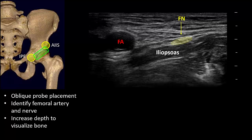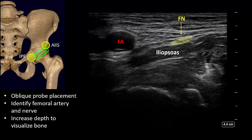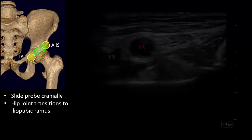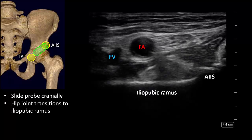Increase the depth as needed to visualize the hyperechoic line of the underlying bone. If this line has a curved appearance, it represents the femoral head in the hip joint. If this is seen, slide the probe in a cranial direction. The curved line of the hip joint will transition into a flat line that represents the iliopubic ramus. The anterior inferior iliac spine is often seen as a prominence at the lateral end. The iliopubic eminence lies at the medial end, but with a linear probe it is often not possible to see both in the same view.